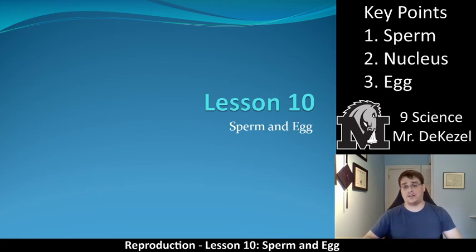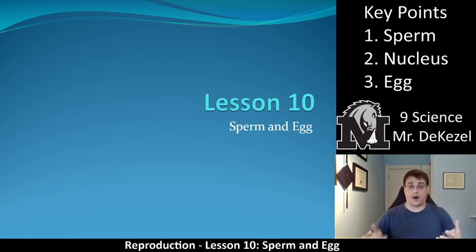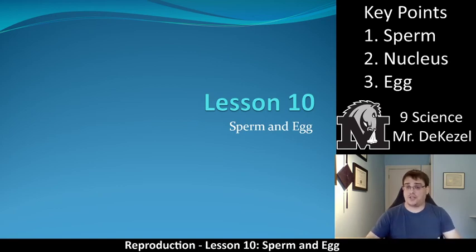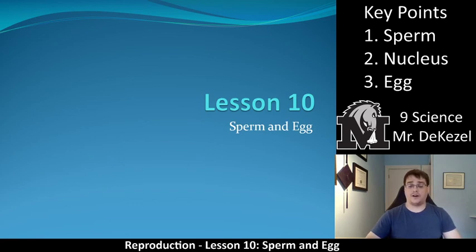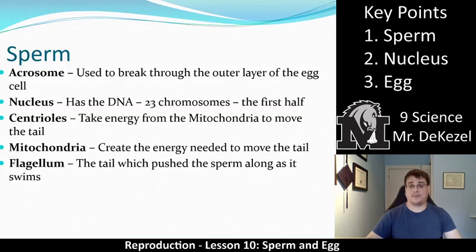In biology, it is the structure of a particular organ, molecule, sperm, or egg that allows it to function in that specific way. So we're going to dig into that — why does a sperm look that way, and why does an egg look that way? What are their functions? Let's jump in.